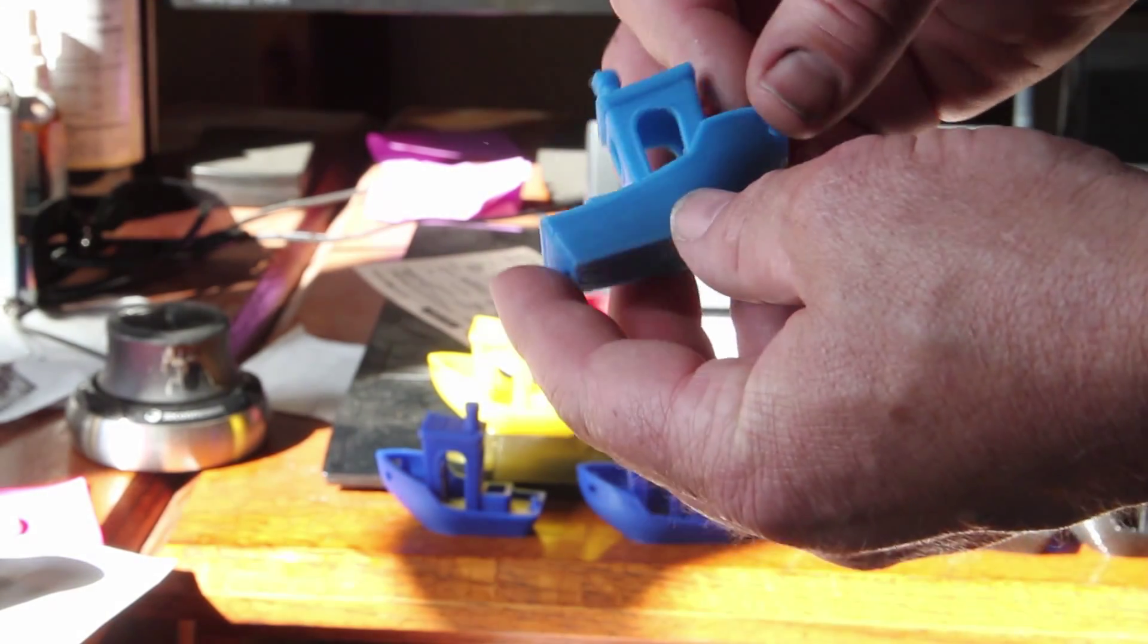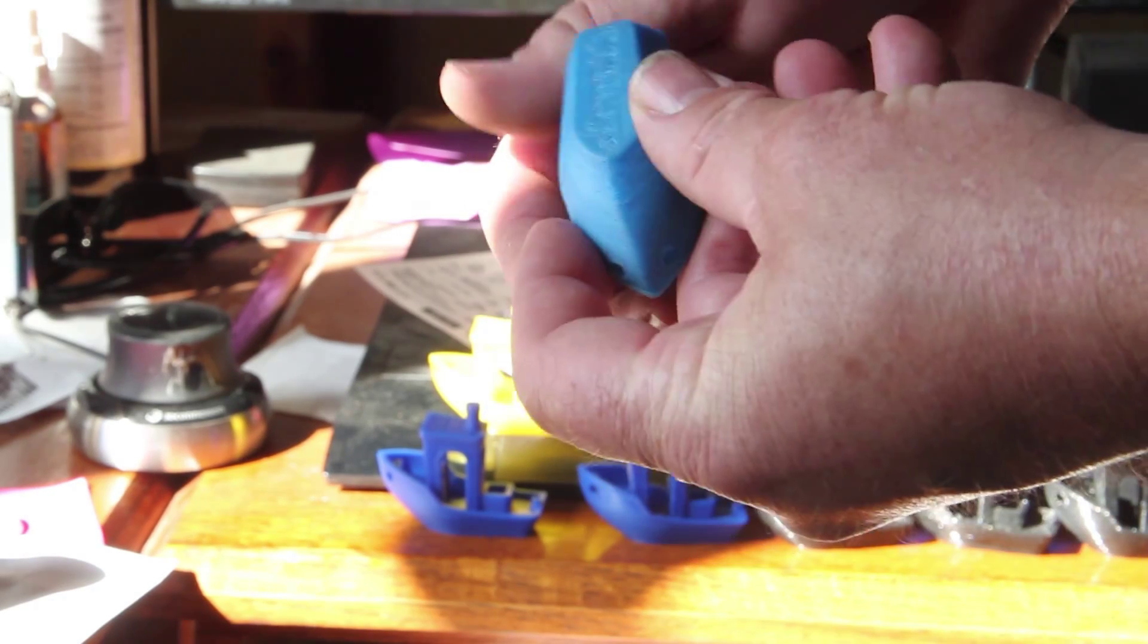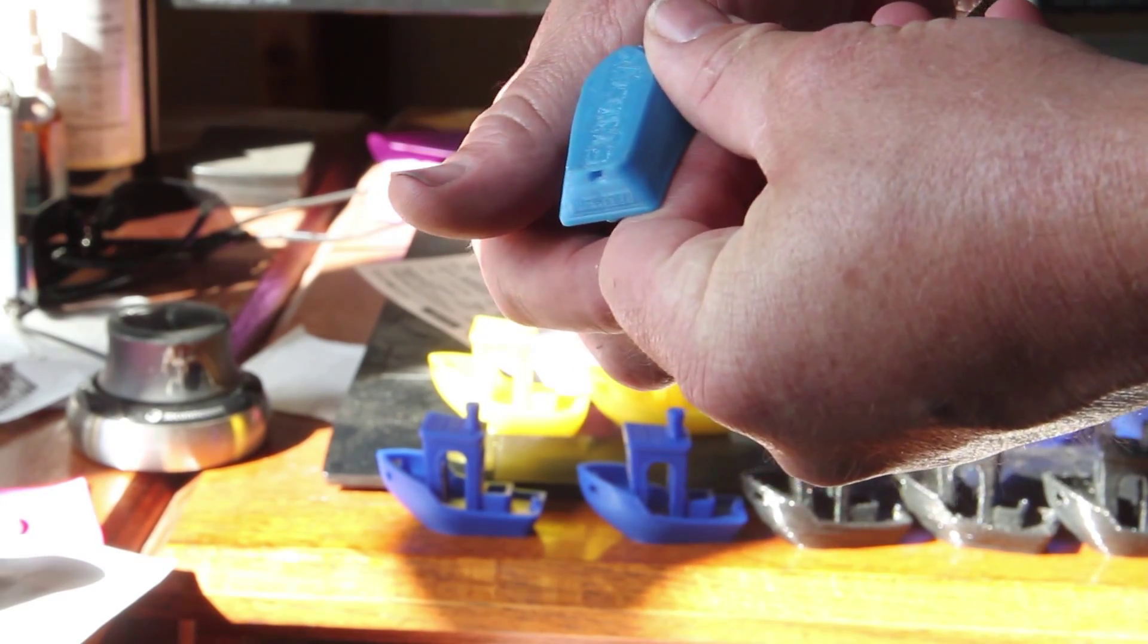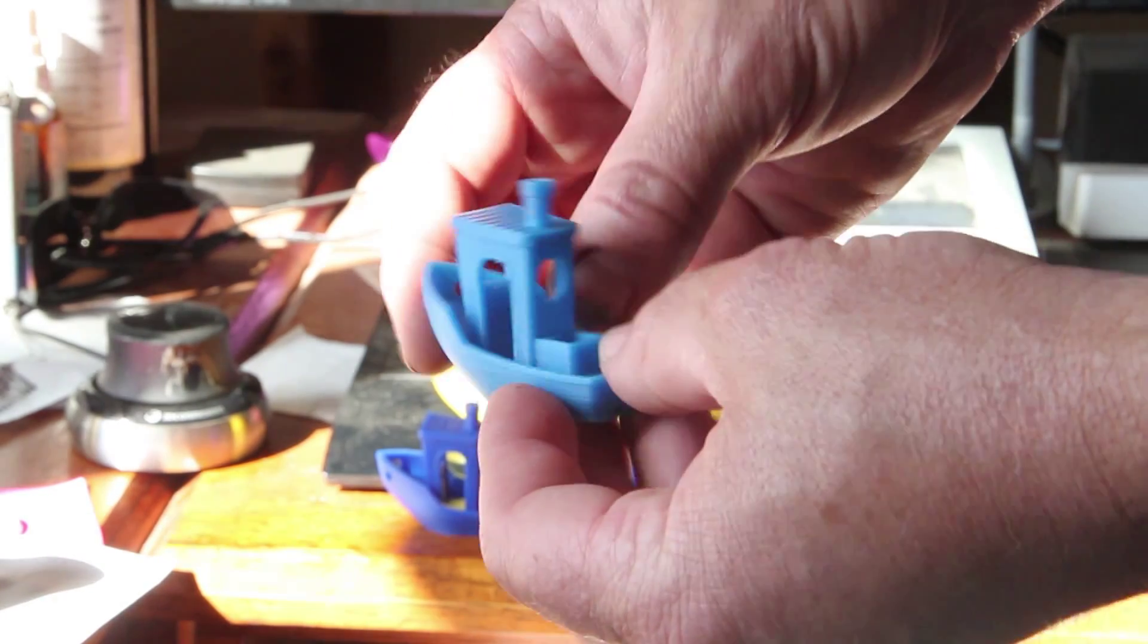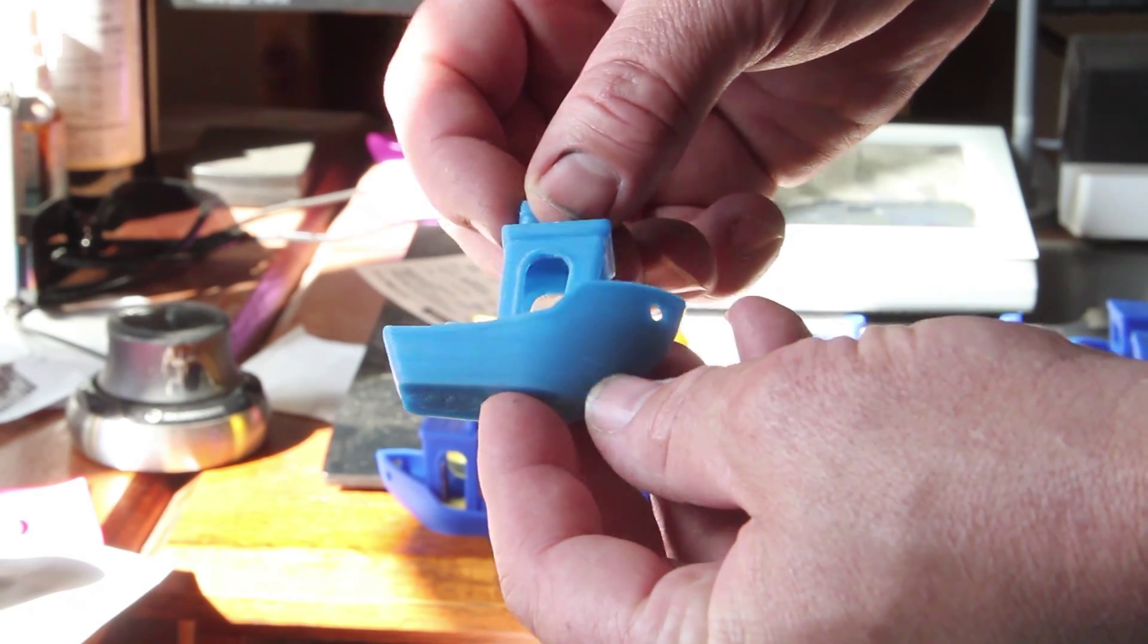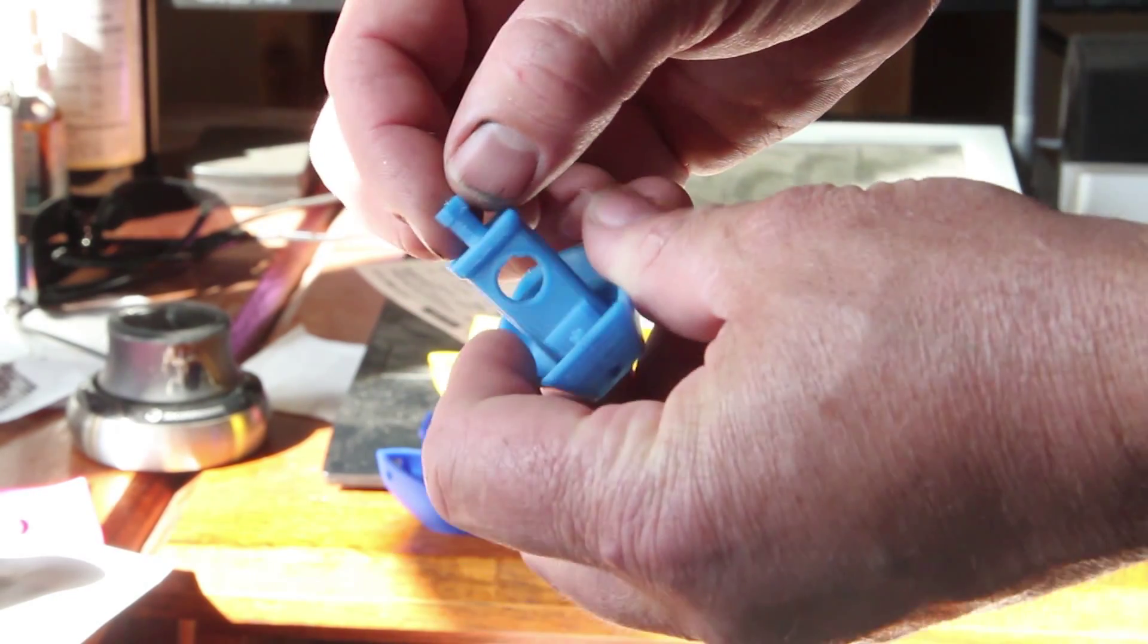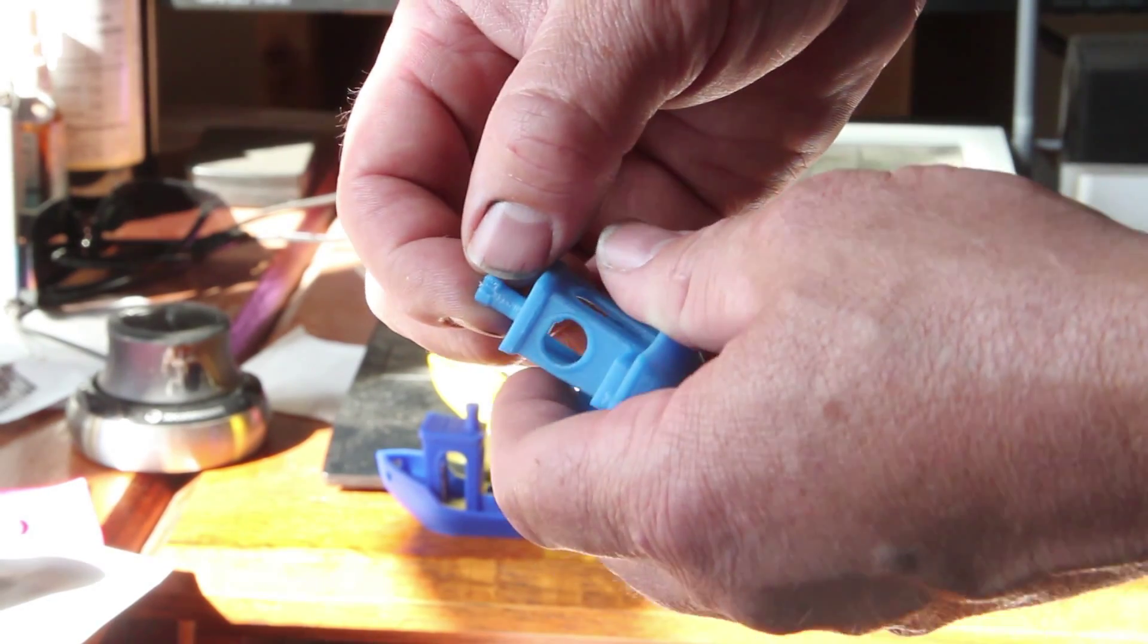This is a sample, a little test print you can get on Thingiverse CT3D.xyz. This is from the direct drive, PLA, glow in the dark actually. You can see there's a little defect up there where I didn't let it slow down enough.